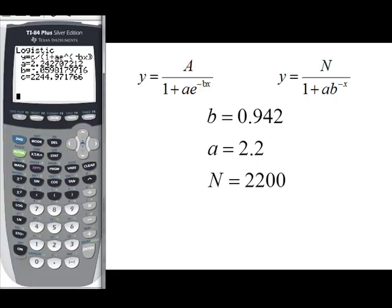We'll take our n, which is the c from the calculator, and it gets rounded off to two significant digits, which is 2200. Now, we can enter our model into WebAssign.